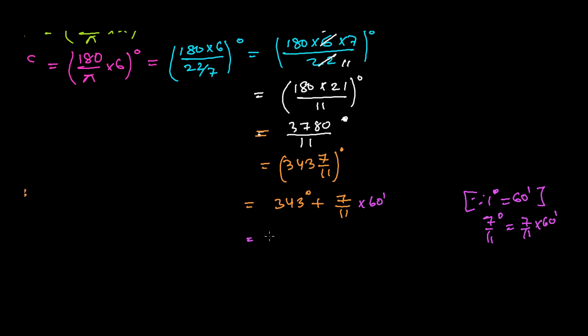We get 343 degrees and now 7 times 60, that is 420 over 11 minutes. So I'm dividing 420 by 11, and I will get 11 times 3 is 33, from 12 we'll get 90, 11 times 8 is 88, and I will be left with 2.